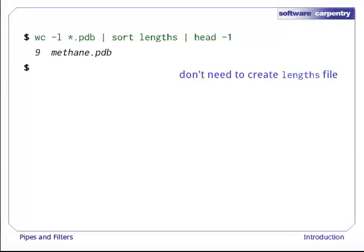Well, if we don't need to create a temporary file sorted-lengths, can we get rid of the lengths file too? The answer is yes. We can use another pipe to send the output of wc directly to sort, which then sends its output to head.